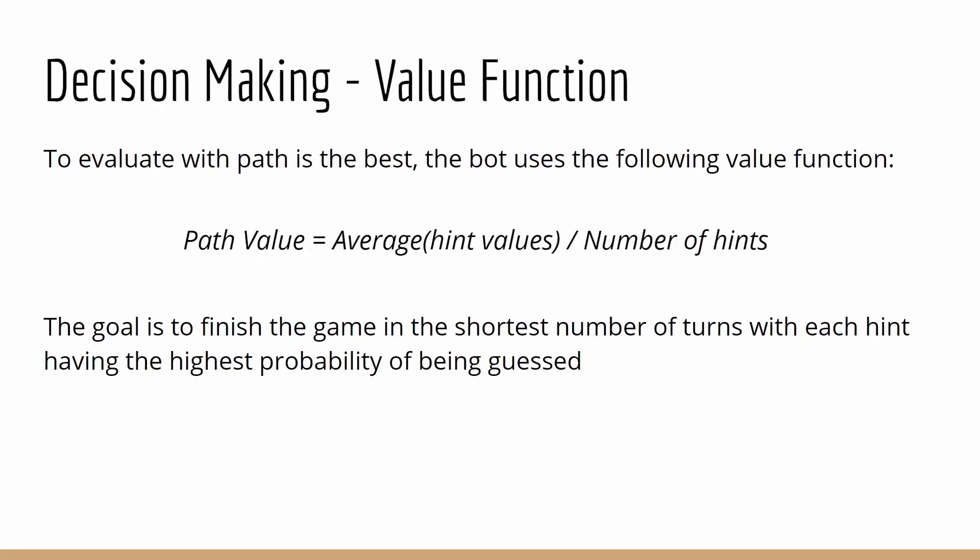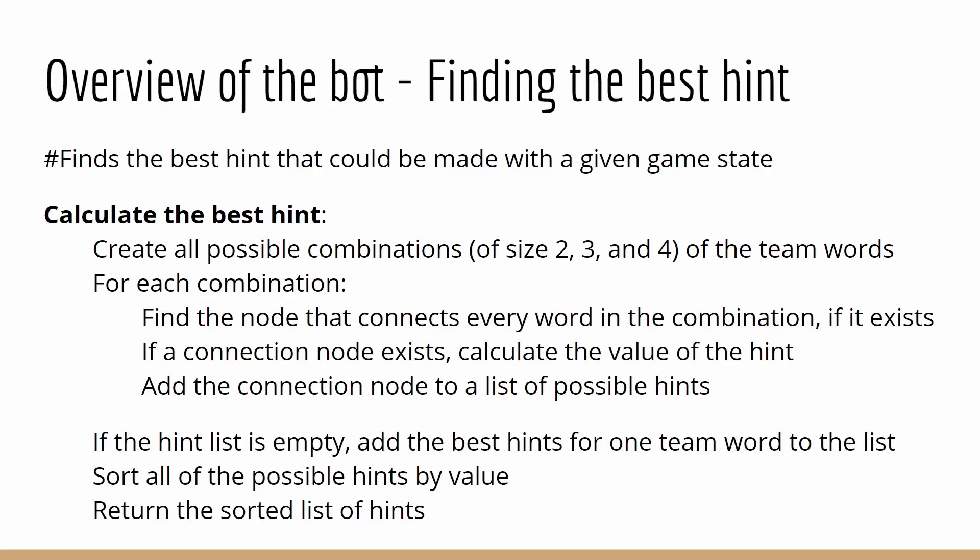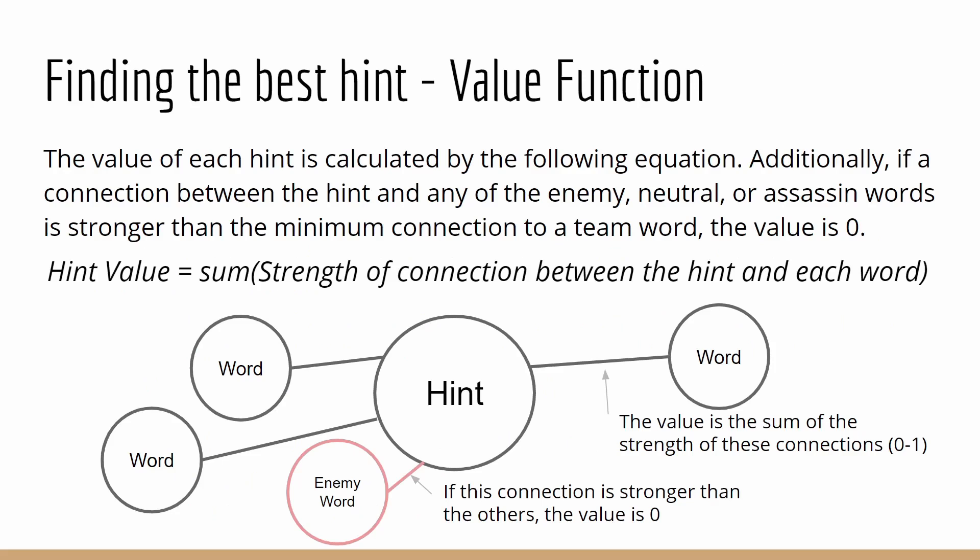In order to value which of the paths found in our tree search is the best, the bot uses a value function where the path value is the average of the hint values divided by the number of hints. Hence, we want to finish the game in the shortest number of turns, with each hint having the highest probability of being guessed. The value of each hint is calculated with an equation where the hint value is the sum of the strength between the hint and each word, but if there is a connection between the hint and any of the enemy, neutral, or assassin words stronger than the minimum connection to a team word, the value is zero, since we want to make sure that our hint does not lead to one of the other words.